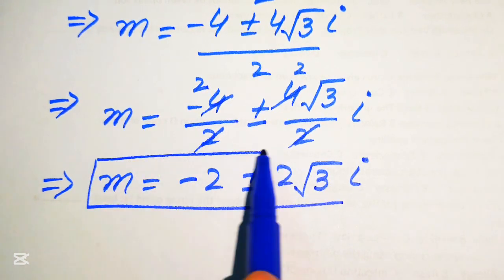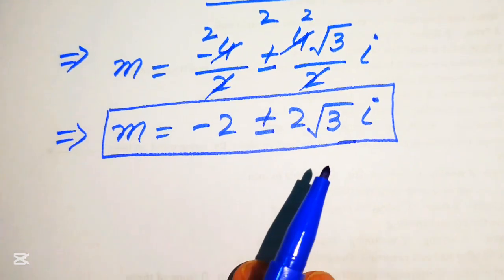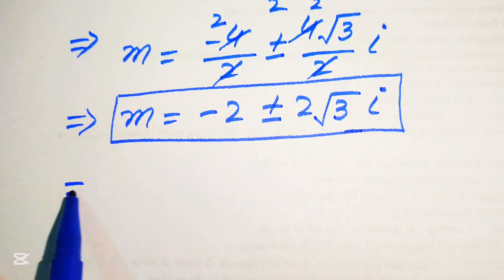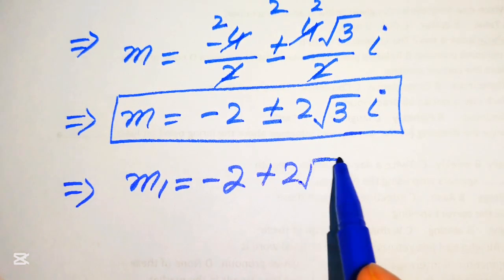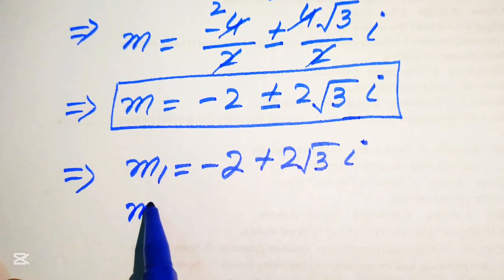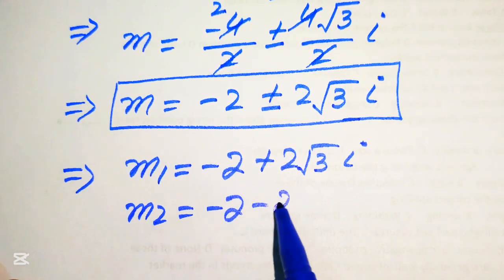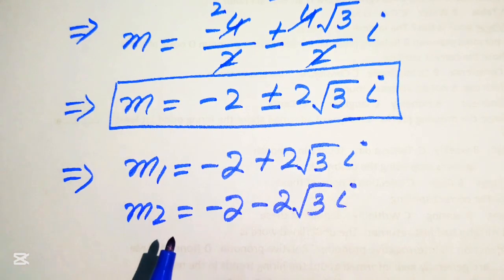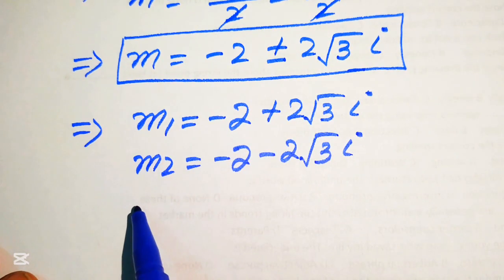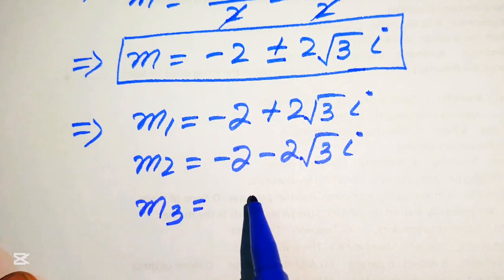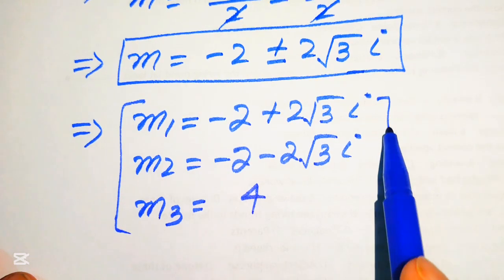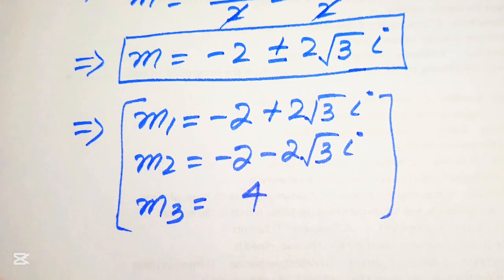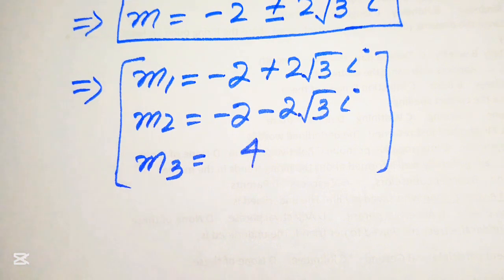These are the two complex roots of the given equation. Finally, the three roots are: m₁ equals minus 2 plus 2√3·i, m₂ equals minus 2 minus 2√3·i, and m₃ equals 4. This is the final answer. Thank you so much for watching this video — please subscribe to my channel for more exciting videos.